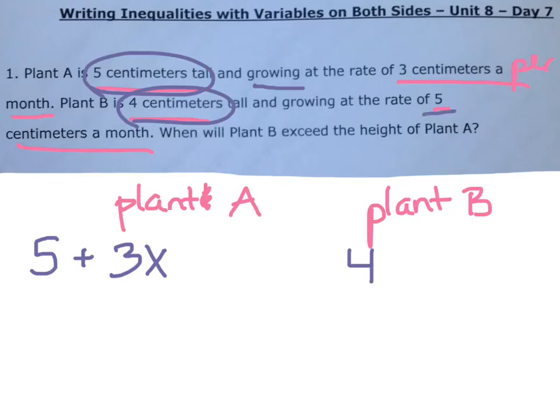And it's growing at a rate of five centimeters per month. Five centimeters a month each month. So that five is going to be the one with the X. So now I have what I need on each side and I'm just missing what sign it is.